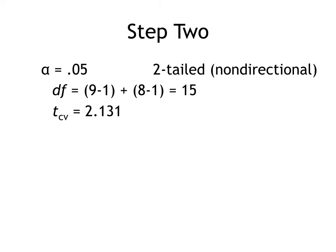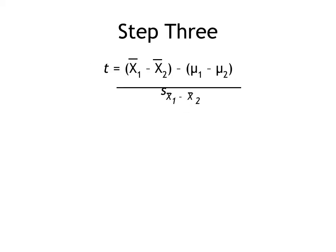If my test statistic exceeds that critical value, either plus or minus, I'm going to reject my null hypothesis — the probability of pulling those sample means just by random chance is so small that I can reject the null hypothesis. So now I'm going to compute my test statistic.